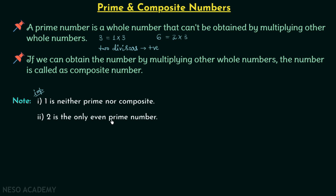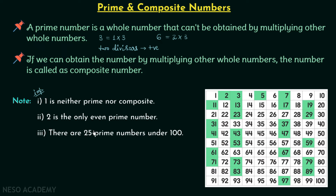Point number two: two is the only even prime number. Out of all prime numbers, two is the only even one — all the rest are odd in nature. Point number three: there are 25 prime numbers under 100. This is important because prime numbers up to 100 are often asked in examinations. In the table, all prime numbers are highlighted in green, and you will observe that only two is even while all other prime numbers are odd.